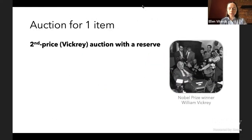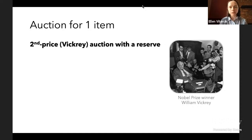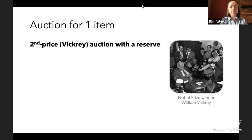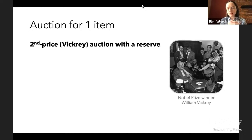For those of you who are not affiliated with the learning and games workshop, I'll give a one-slide overview of a classic mechanism from mechanism design. This is an auction for selling a single item, called the second-price or Vickrey auction with a reserve, named after Nobel Prize winner William Vickrey.